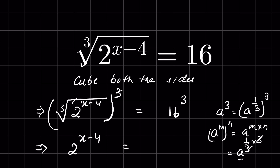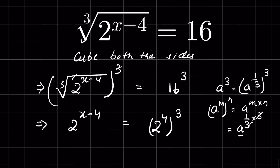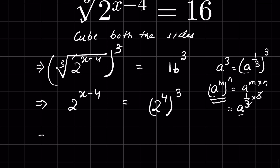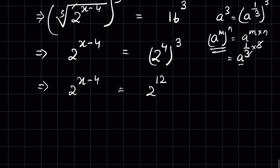So 2 raised to the power x minus 4 is equal to 16 cubed. We can write 16 as 2 raised to the power 4, so this becomes 2 raised to the power 4, whole raised to the power 3. Again using the property a raised to the power m whole raised to the power n, this gives 2 raised to the power x minus 4 is equal to 2 raised to the power 12.